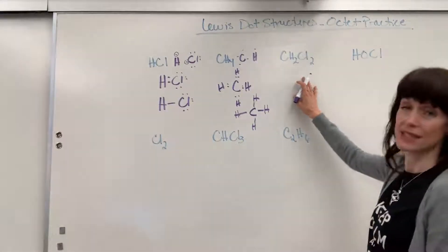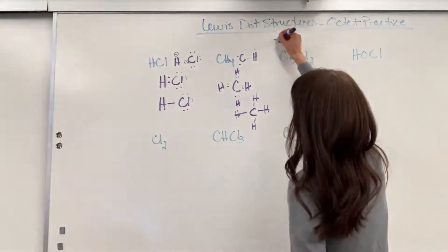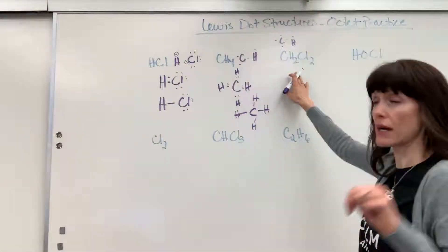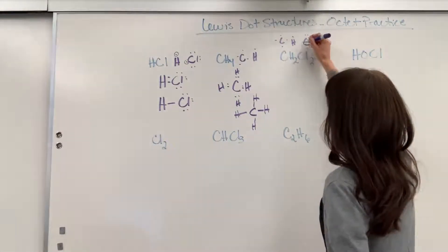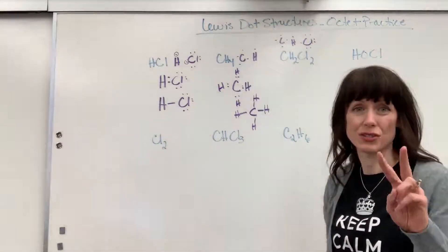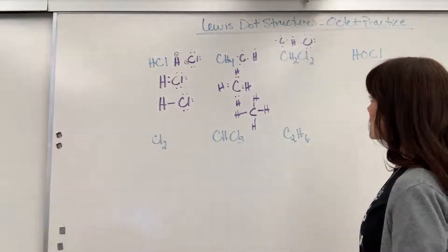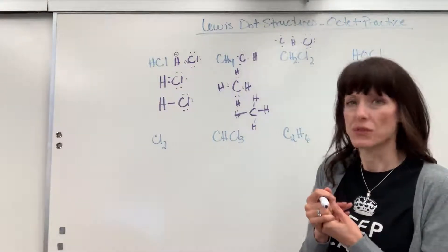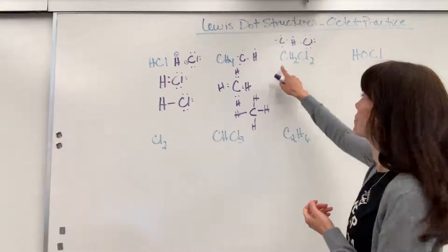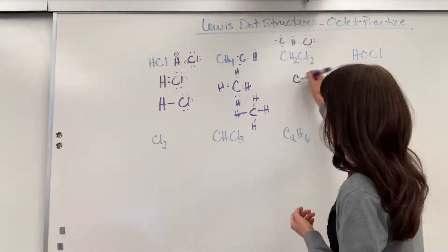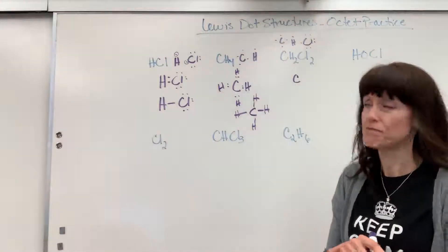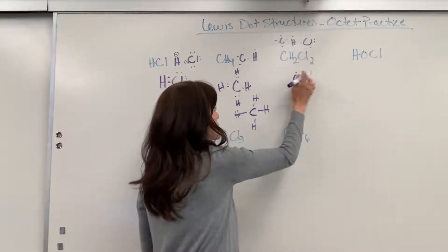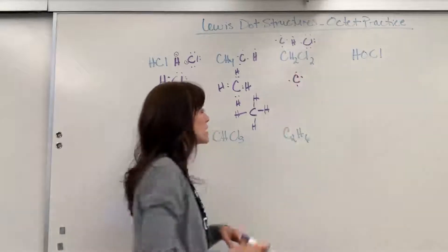Let's look at CH2Cl2. Carbon again has four valence electrons. Hydrogen has one valence electron, and I've got two hydrogens. Chlorine has seven valence electrons, and I've got two chlorines. The central atom is the one with the fewest valence electrons — that will be carbon. So carbon is going to be in the center with its four valence electrons.